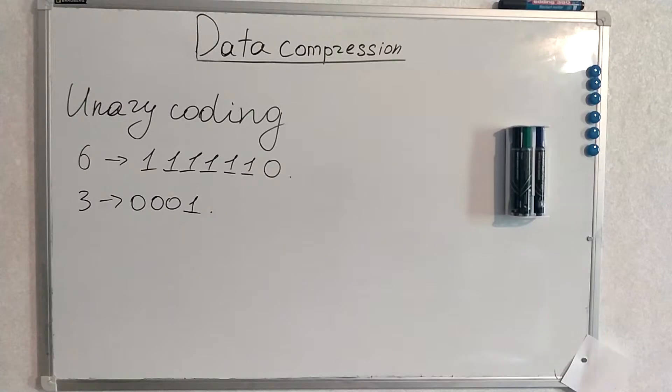You can encode any number with unary coding and this will actually mean not more than give into your code stream the number of ones or the number of zeros which is equal to a number you are trying to encode.